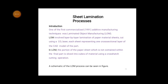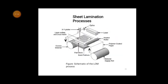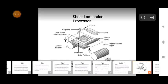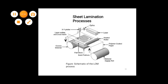This process involves the layer-by-layer lamination of paper material sheets, each cut using a CO2 laser. Each sheet represents one cross-sectional layer of the CAD model of the part. The portion of the paper sheet not contained within the final part is sliced into cubes of material using cross-hatched cutting operations.